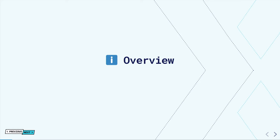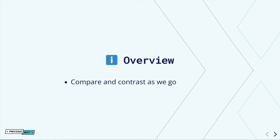We're going to look at the Composition API in Vue. There are a few different ways to do things in Vue — there's the Composition API and the Options API — but we're only going to look at the Composition API. We're only going to look at single file components, and we're only going to look at the script setup syntactic sugar. The Composition API is closest to React. Bear in mind that you can add JSX support for Vue, which gets it even closer to React, but we're not going to do that here.